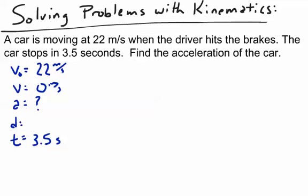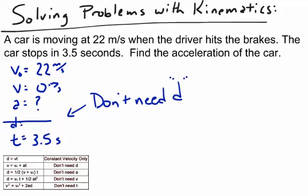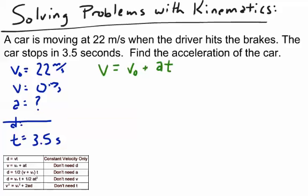Now notice in our list of variables, what we don't need is the displacement. Since we don't need d, remember from my list of equations, there's an equation that says don't need d. And that equation is v equals v0 plus at. So I write out that equation.